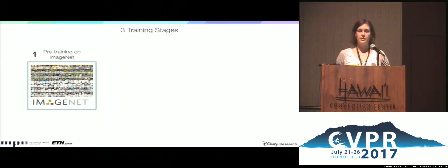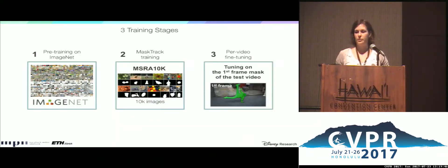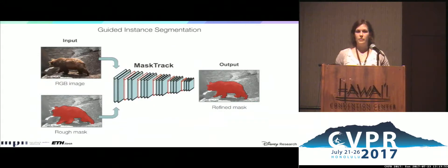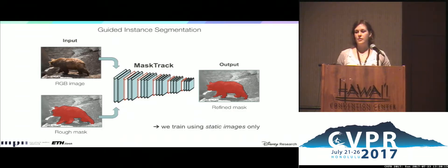We employ three training stages. First, we pre-train on ImageNet for the image labeling task. At the second stage, we train on a semantic segmentation dataset to generalize well across different objects, and then fine-tune on the first frame mask on the test video. At the second stage, we use only static images. The task is to provide an accurate segmentation given an image and a rough mask estimate as an extra channel. The extra channel serves to provide the approximate location and shape of the object in the current frame. Because we only use a binary mask in the extra channel, we can easily synthesize training samples from a single annotated frame, instead of using consecutive video frames. This allows us to train on a diverse set of images and avoid using scarce video annotations.